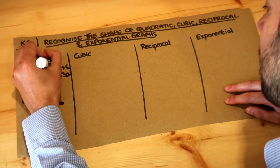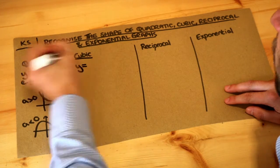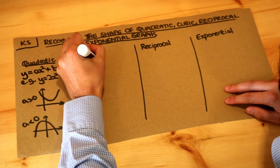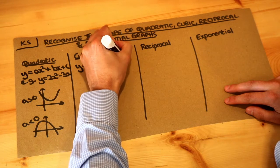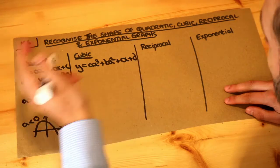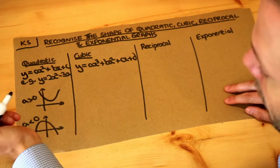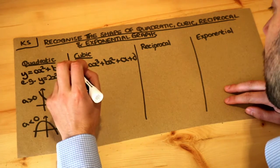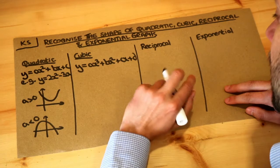What about cubics? Well a cubic is when you have a cube term as you might guess, so you have something x cubed plus something x squared plus something x plus something, and those other coefficients b, c and d might be zero. So it might just be like y equals x cubed — that would still be a cubic. You get different shapes depending on a, the number in front of the x cubed.